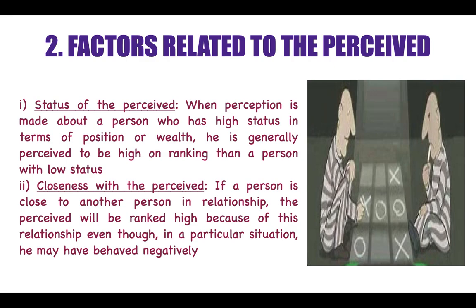For others, these two will be perceived negatively, but for each other they are close — they have a close relationship since they live together and have friendship with each other. Even if they have behaved negatively in other situations and others are perceiving them negatively, due to the closeness with the perceived, he will be ranked higher. These are the factors related to the perceived.